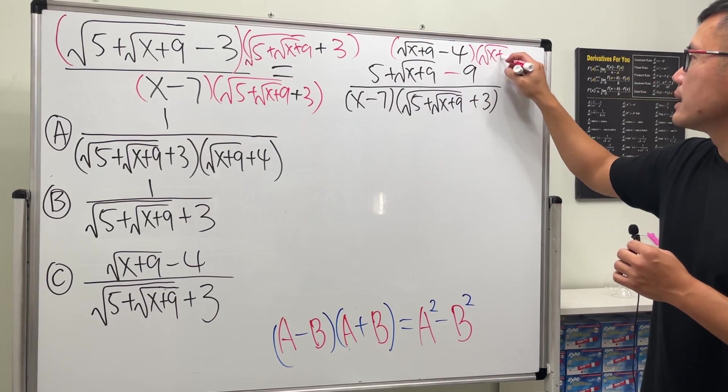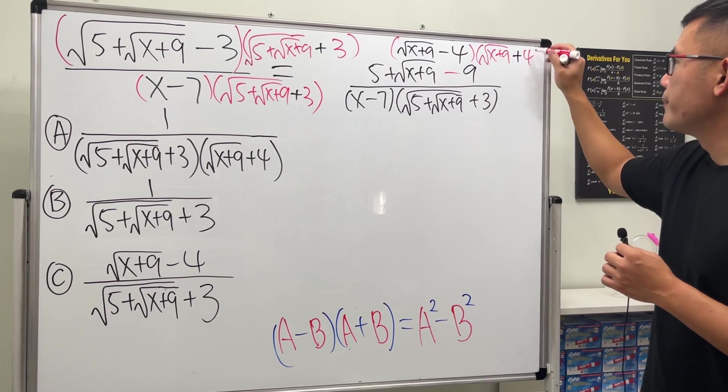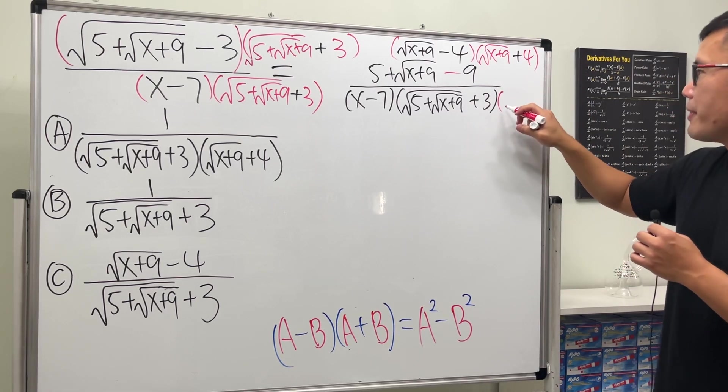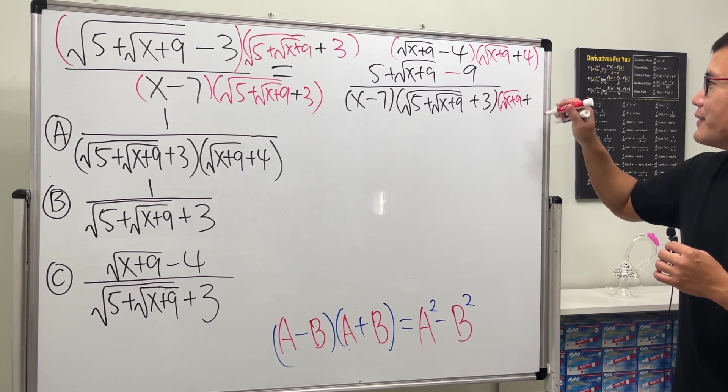Let's go ahead and do the same thing one more time here: √(x+9) and then plus 4. Oh yeah, it's fitting everything, so that's good.